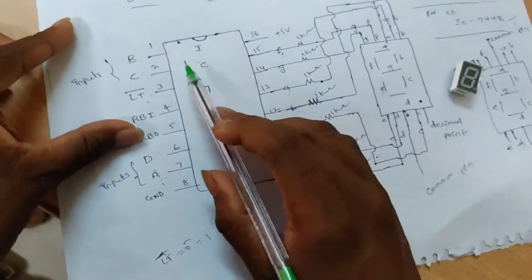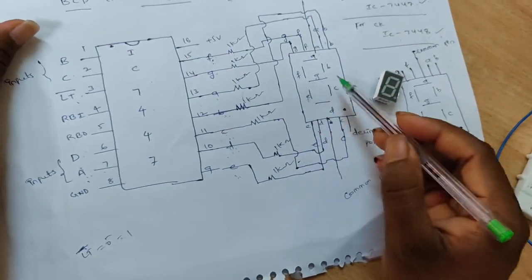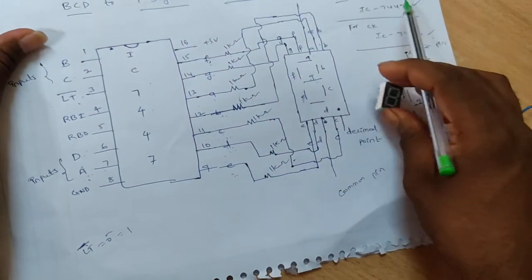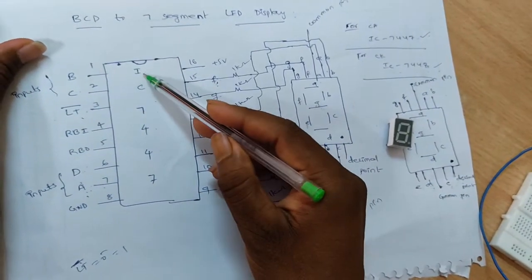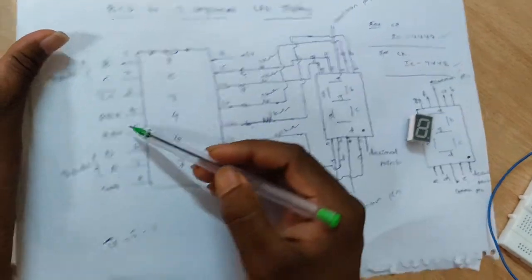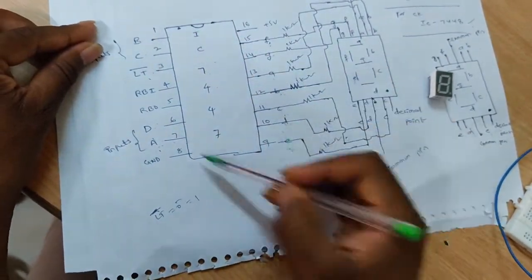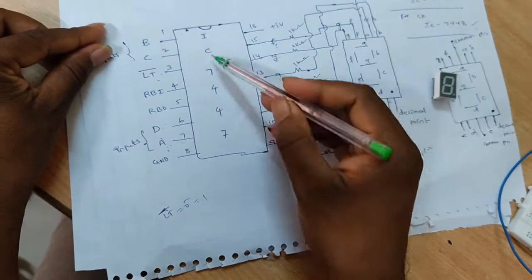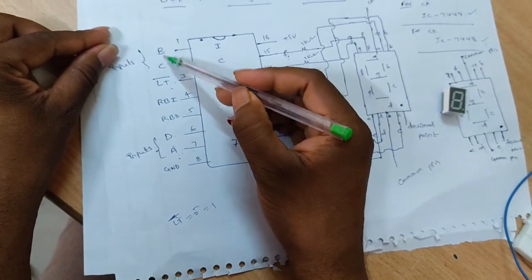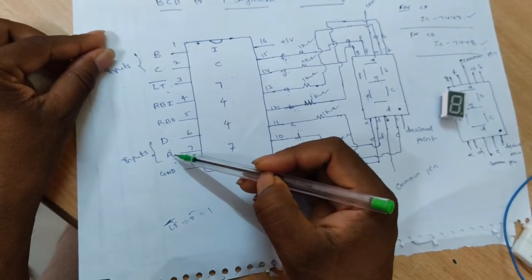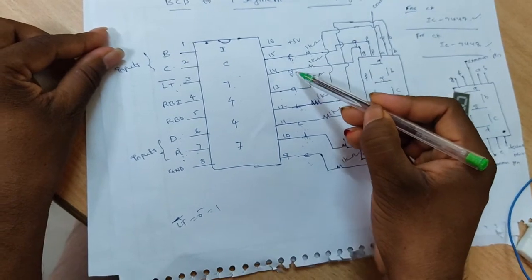In this experiment we have taken a common anode display, so the IC number is 7447. This is the pin diagram of IC 7447. The inputs are B, C, D, A.